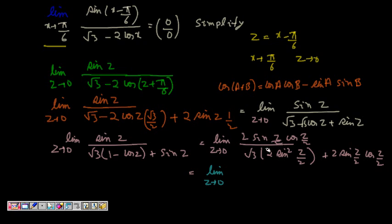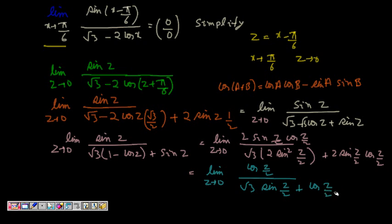After cancelling 2sin(z/2), we get: limit as z→0 of cos(z/2) / (√3·sin(z/2) + cos(z/2)). Now putting z = 0: cos(0) = 1, and √3·sin(0) = 0, cos(0) = 1. So this becomes 1/(0 + 1) = 1. The answer for this limit is 1.